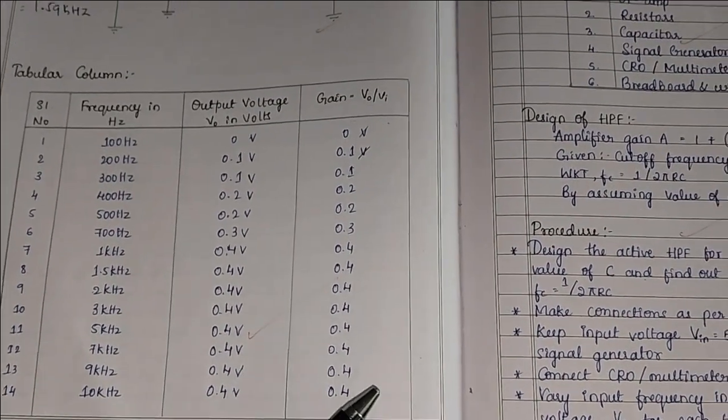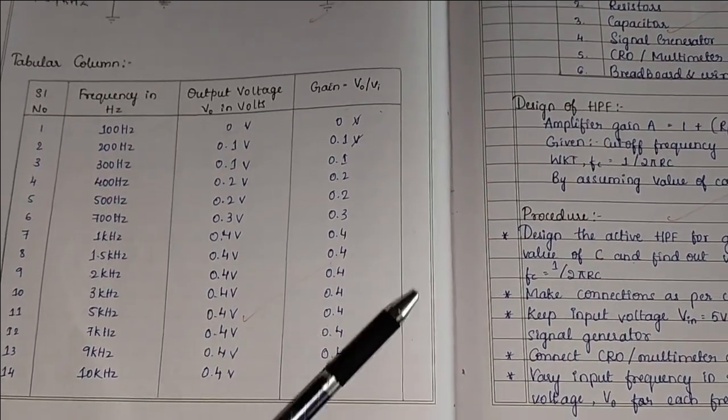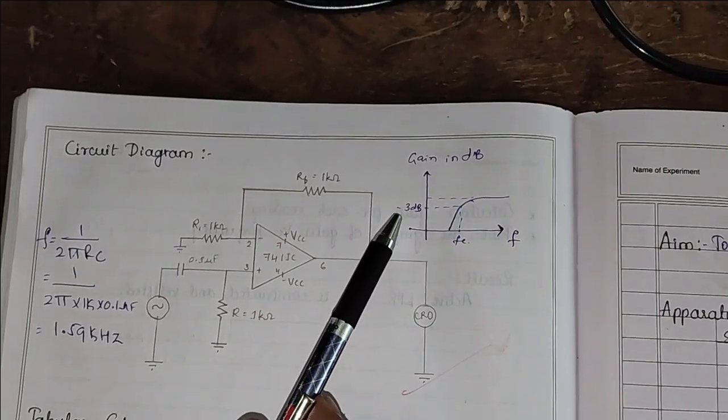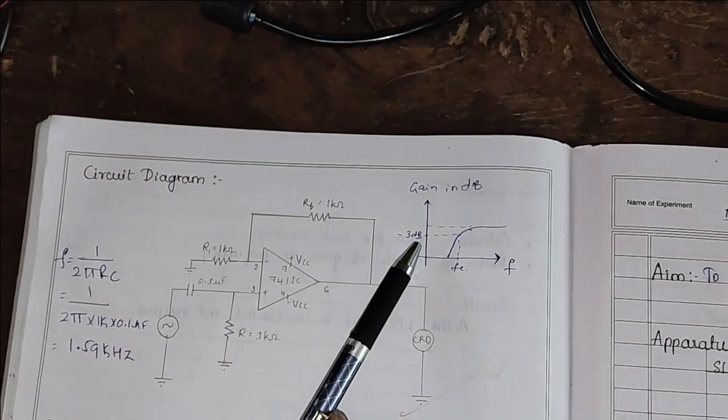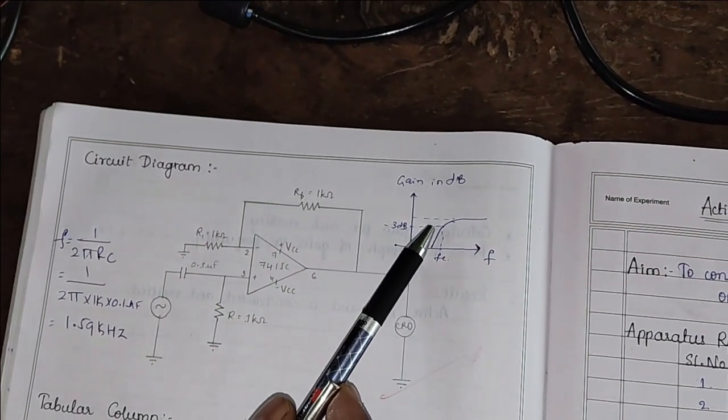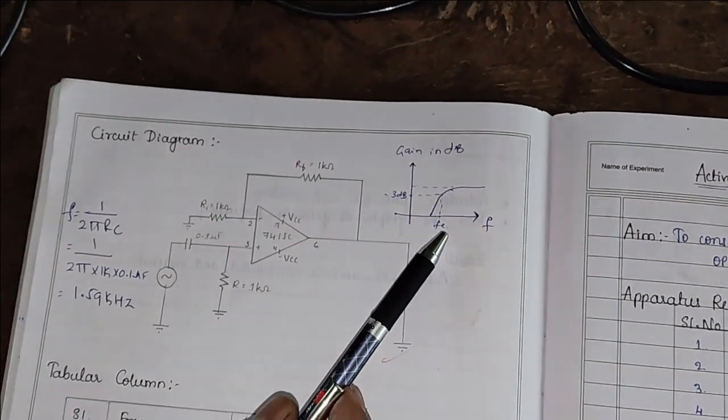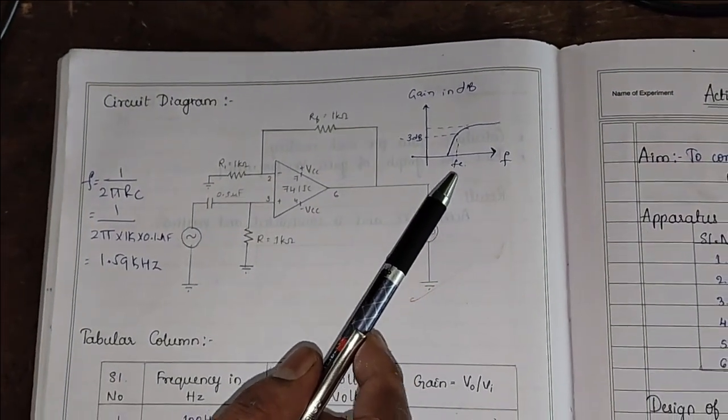And we should calculate gain in dB. Then we have to draw the graph. Once we draw the graph and mark minus 3 dB on the graph, that line is intersected on the graph that gives the cutoff frequency. In this way we conduct active high pass filter.